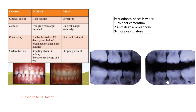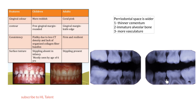In the adult, the distance from the cementoenamel junction to the alveolar crest is about 1.5 to 2.5 mm, but here in the child it is about 0 to 2 mm.